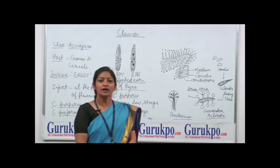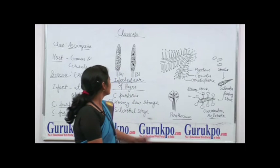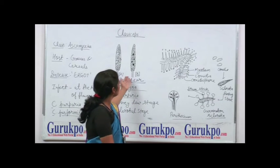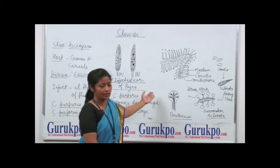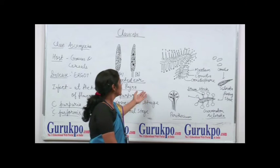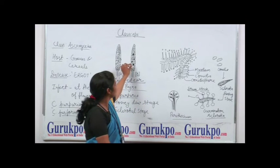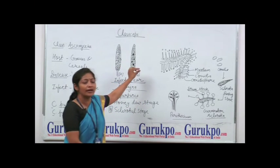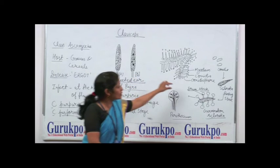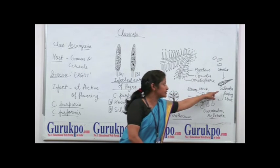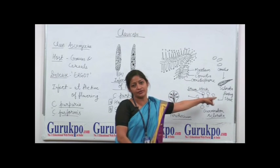After the honeydew stage, this stage converts into the sclerotial stage, in which the honeydew stage is converted into black, hard, oval-shaped structures. This is called the sclerotial stage.